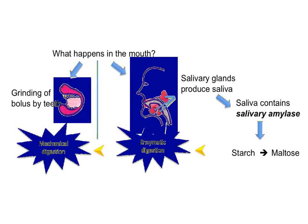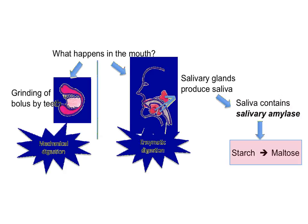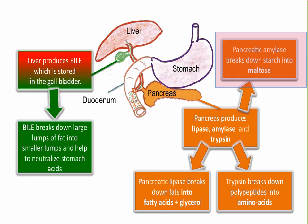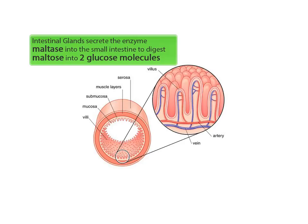To quickly recap: both physical and chemical digestion of starch begin in the mouth, where salivary amylase is secreted from the salivary glands and digests starch to maltose. In the small intestine, pancreatic amylase from the pancreas digests any remaining starch to maltose, and maltase secreted by the intestinal glands then digests maltose into two glucose molecules. Finally, glucose is absorbed directly into the bloodstream through the capillary network of the microvilli in the small intestine.